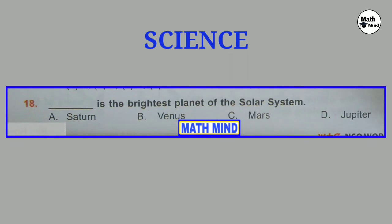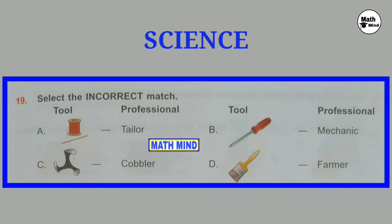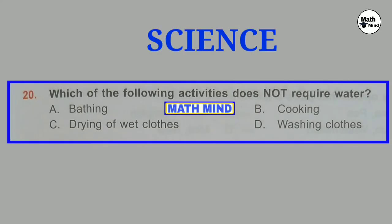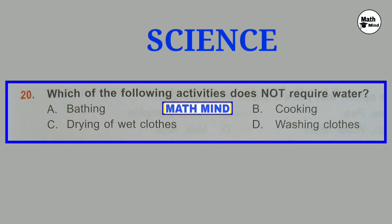Question number 18: Dash is the brightest planet of the solar system. Correct option is B: Venus. Question number 19: Select the incorrect match. Correct option is D. A farmer uses instruments like sickle, spade, hoe, etc. to farm his field. Paint brush is used by a painter, so this is the incorrect match. Question number 20: Which of the following activities does not require water? Correct option is C: Drying of wet clothes. To dry wet clothes we do not need water — we remove water. For bathing, cooking, and washing clothes we need water.